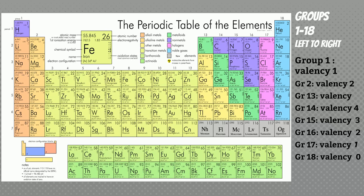Next, group 14 elements have 4 electrons in the outermost shell. They may lose or gain 4 electrons, so valence is 4. Group 15 elements have 5 electrons in the outermost shell, so they require 3 electrons to gain stability, and valence is 3.